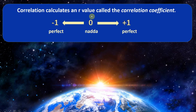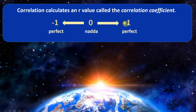If you get an r value equal to zero, it means there is no linear correlation between your two variables. I like to tell people: zero means 'no' — nothing. As the r value gets closer and closer to positive one, the relationship between your two variables is getting stronger and stronger. The same is true as r gets closer and closer to negative one.